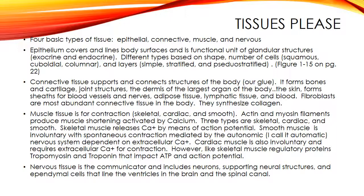Actin and myosin filaments interact to shorten the muscles in a process activated by calcium. In skeletal muscle, calcium is released from the sarcoplasmic reticulum in response to an action potential. Smooth and cardiac muscles are often called involuntary muscle because they contract spontaneously through the autonomic nervous system. The sarcoplasmic reticulum in smooth muscle is less defined and depends on the entry of extracellular calcium ions for muscle contraction.